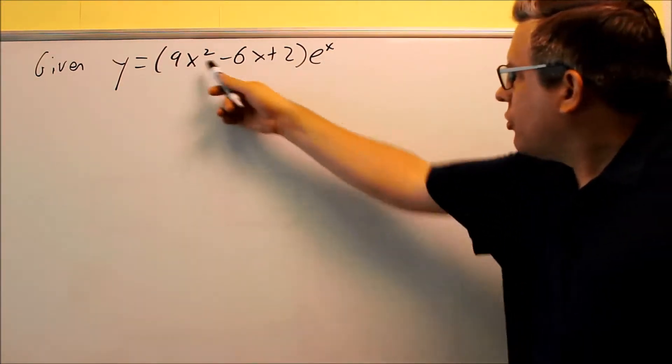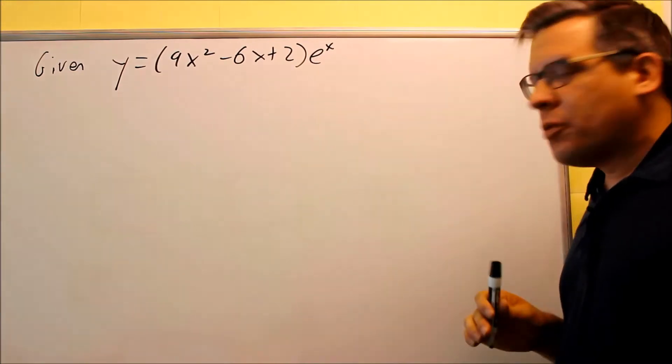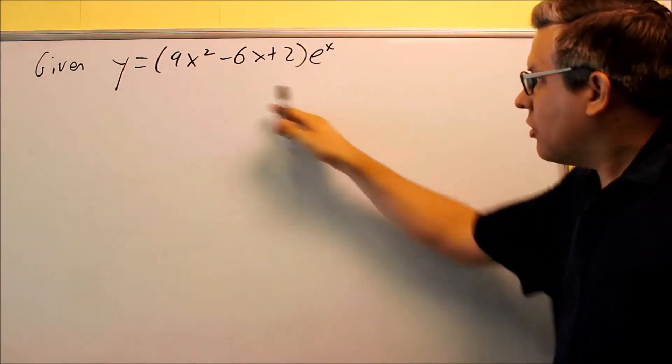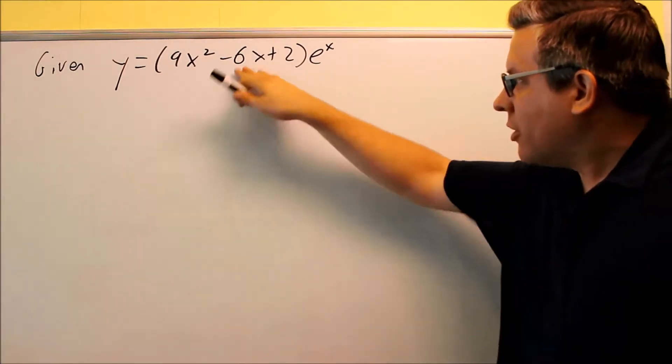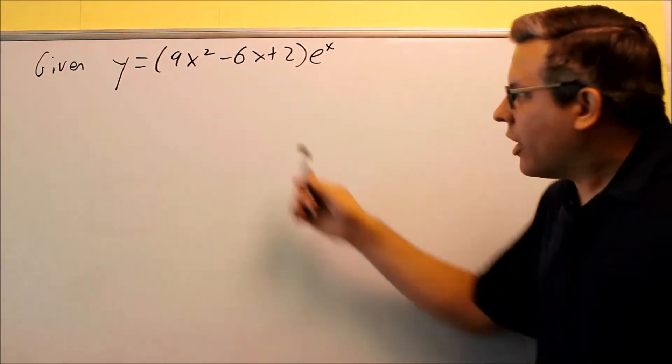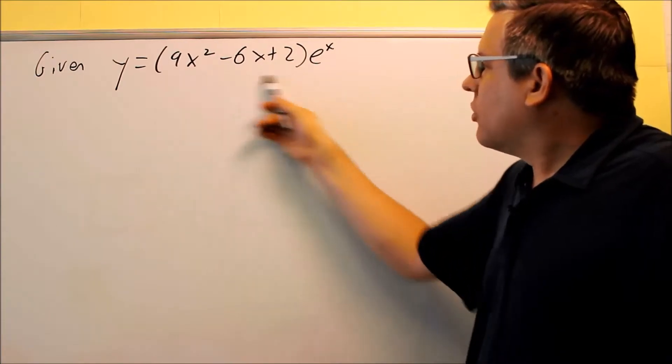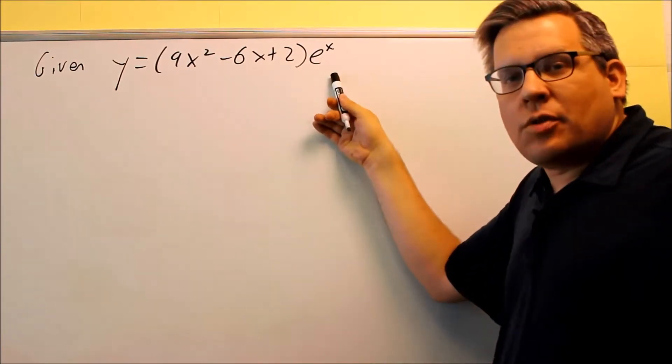Yeah, it is possible for you to distribute the e to the x all the way through, but that'll make it more complicated because then you have three different terms. A couple of them will require you to do product rule individually. So it's actually better to keep it in this form here. Your f is going to be this whole entire thing, and your g is going to be the e to the x.